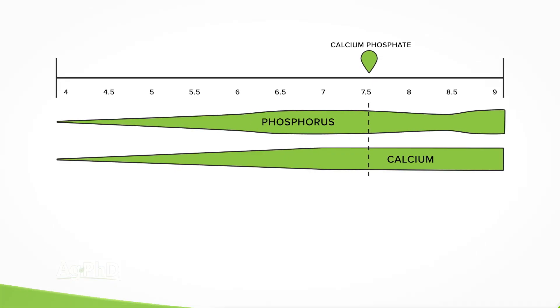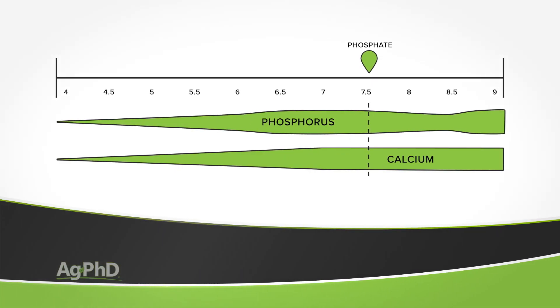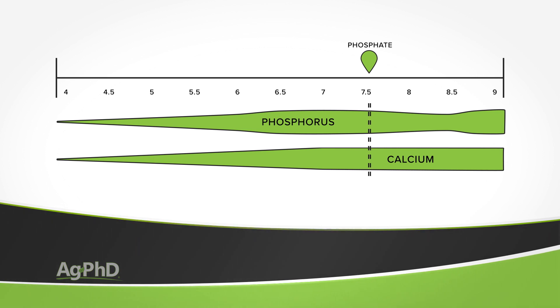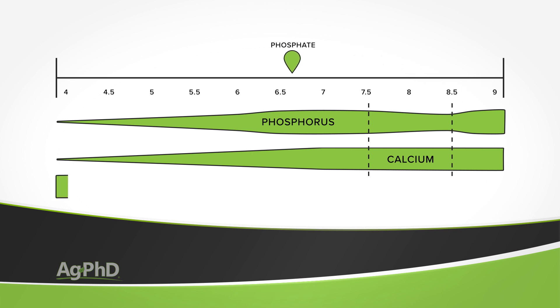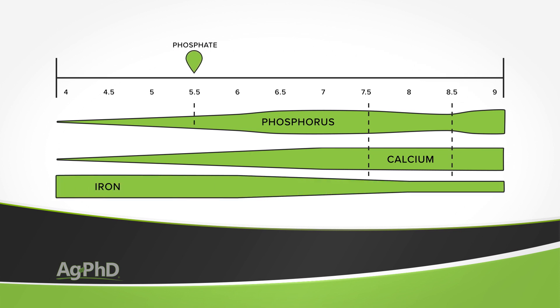The same thing can happen with phosphorus when we get to low pH's. The calcium binding issue occurs predominantly in the 7.5 to 8.5 pH range. When the pH is low — say down in the 5's — we commonly see phosphate binding with iron. When the pH is down in the 4's, we commonly see phosphate binding with aluminum. In either case, there's phosphorus in the soil, but unfortunately it's binding with another element so plants can't access it. That's a real problem.